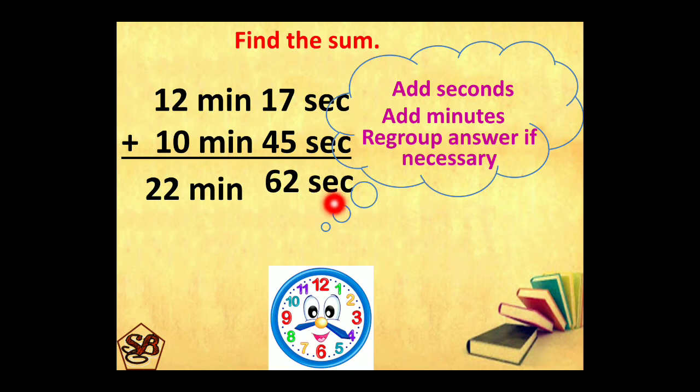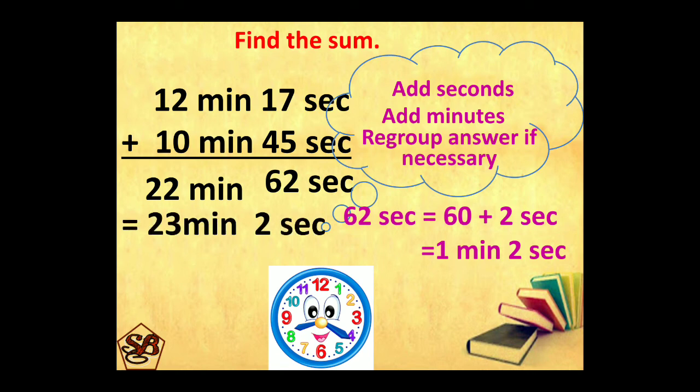Now here 62 is greater than 60, so this can be regrouped. 62 can be written as 60 plus 2 seconds. 60 seconds is equal to 1 minute. So 1 minute 2 seconds. This one will be added here in these minutes. So 22 will become 23 minutes and 2 seconds extra. So 23 minutes 2 seconds is our final answer.